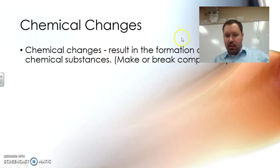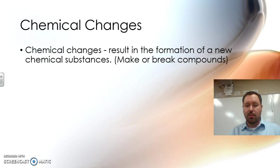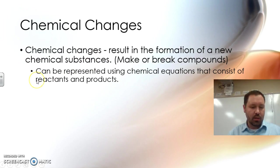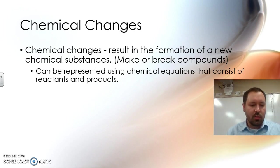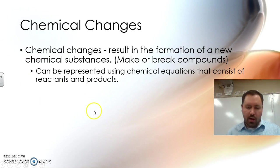Moving on. Chemical changes result in the formation of a new chemical substance. Chemical changes make compounds and chemical changes break compounds. They can be represented using chemical equations that consist of reactants and products — two good vocabulary words to remember. Reactants are the things you put together in a chemical change, and the products are what you get.